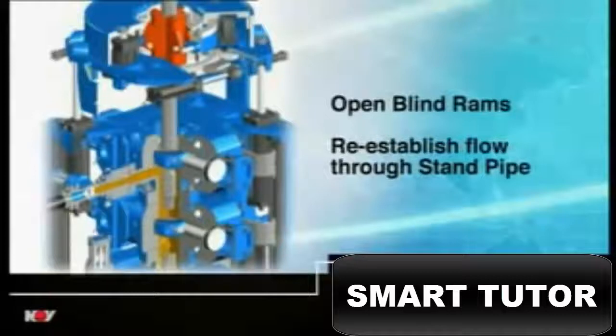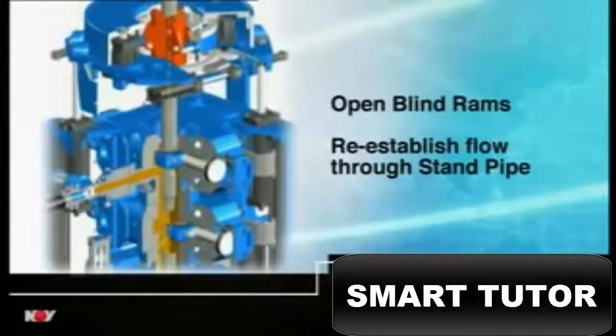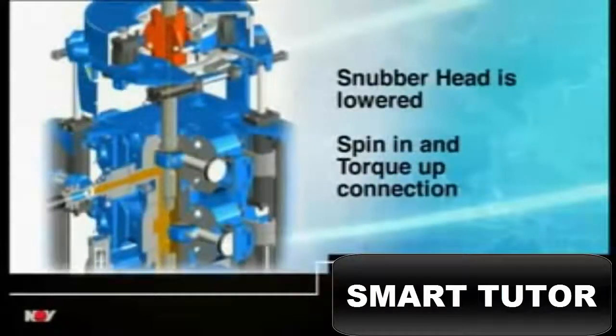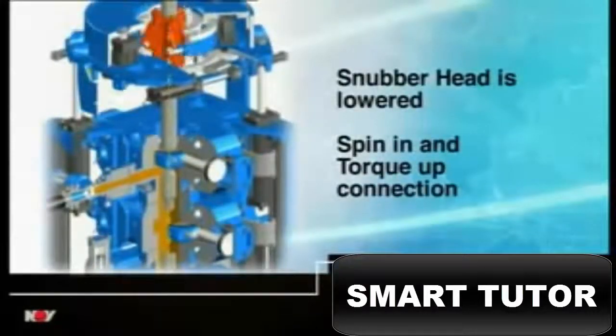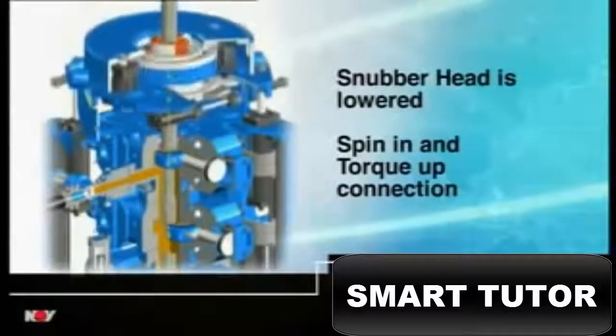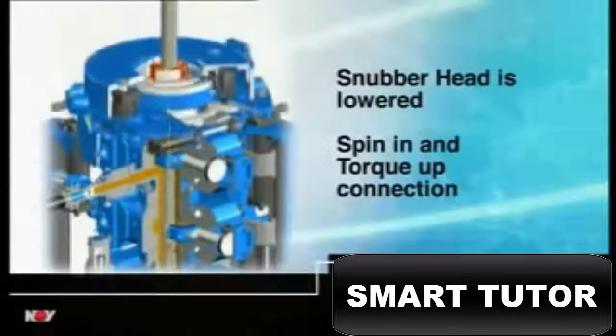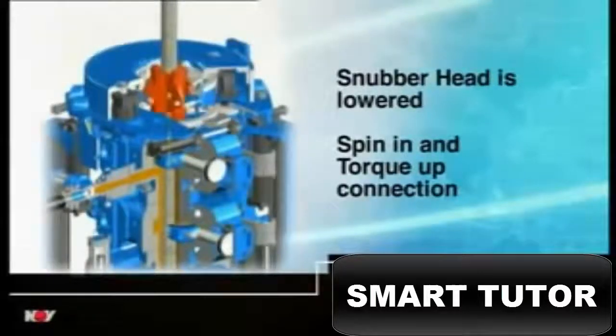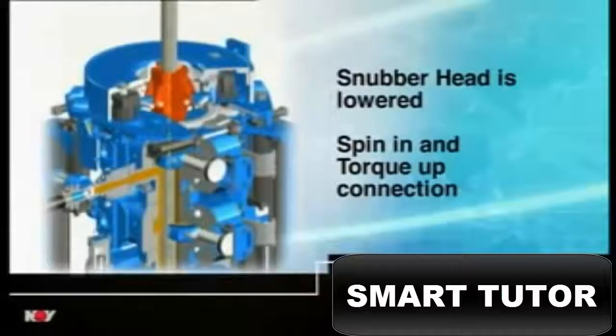The blind rams are opened, re-establishing simultaneous mud flow through the stand pipe and top drive, as well as through the side connection and down through the open drill pipe box. The snubber head pulls down the new stand, and spins up the connection to a torque of around 10,000 foot-pounds. Full make-up torque is then applied by the torque cylinders.